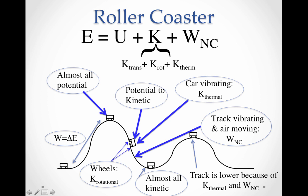The car was pushing air molecules, and the vibrations in the wheels and track were also causing sound and air movement. The track and air vibrating is this non-conservative work. That's why the next hill on the roller coaster always has to be lower than the previous hill — because of these two terms: thermal energy going internally into the car, and non-conservative work being done to the outside environment with the track vibrating and the air moving.